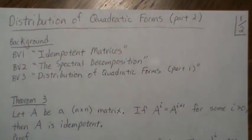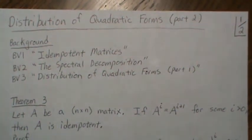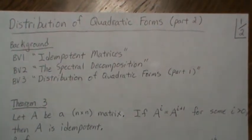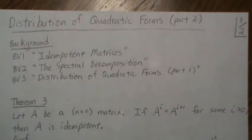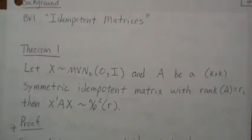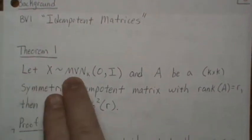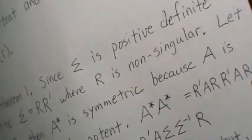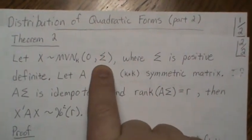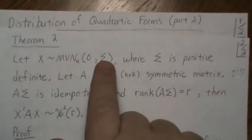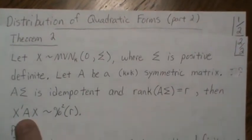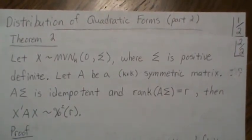This is part two in a series called 'Distribution of Quadratic Forms with Normal Variants,' where x is normally distributed. In part one we looked at this random variable when x was normal(0, I), and in Theorem 2 we looked at it when x was normal(0, sigma) where sigma was positive definite. Sigma and A had to meet a couple of requirements before it was considered chi-squared with r degrees of freedom.